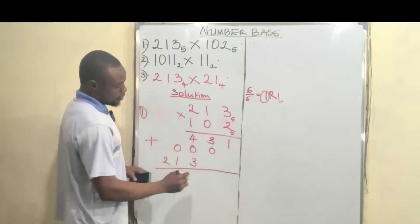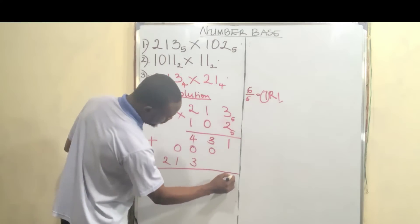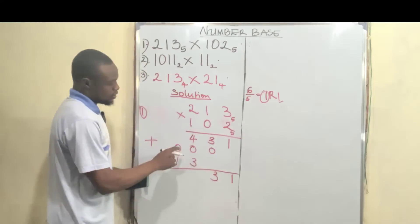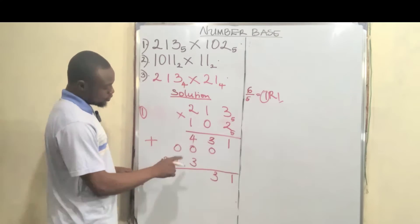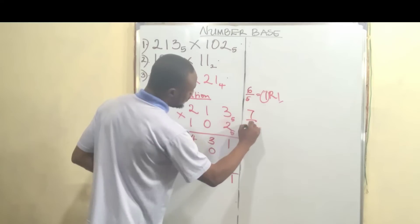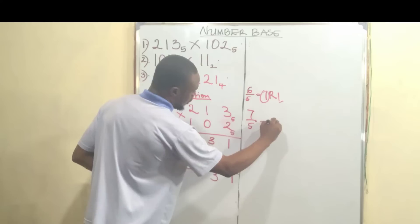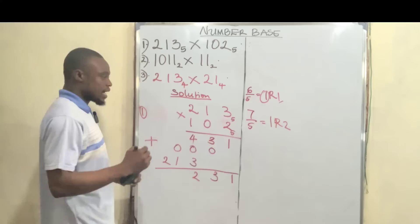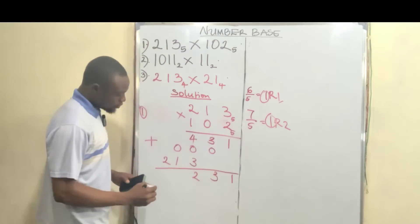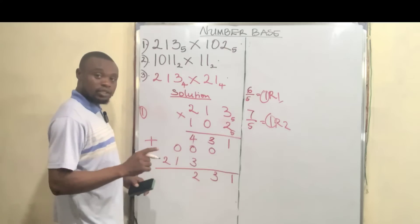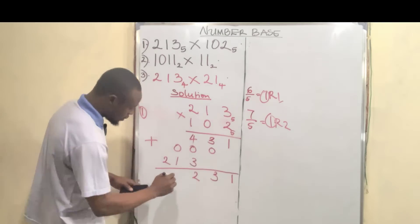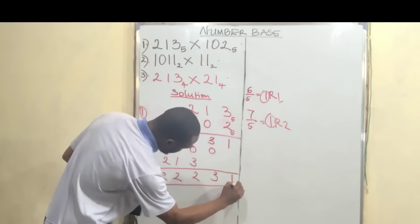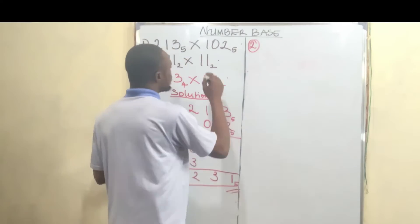So 1 plus nothing is 1, bring down 1. 3 plus 0 is 3. Now 4 plus 0 is 4, plus 3 is 7. 7 in base 5: 7 divided by 5 is 1 remainder 2, so write down 2 and carry 1. Then 0 plus 1 plus the carried 1 is 2. Bring down 2. And that is our answer in base 5.